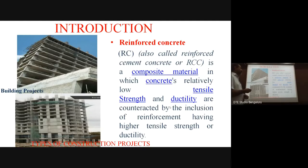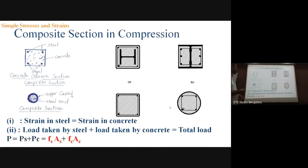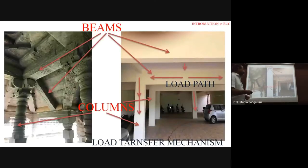Reinforced concrete is a composite material consisting of concrete and reinforcing steel. A composite material means a combination of two materials — one is concrete, the other is steel along with reinforcing bars. These form various RCC composite structures.